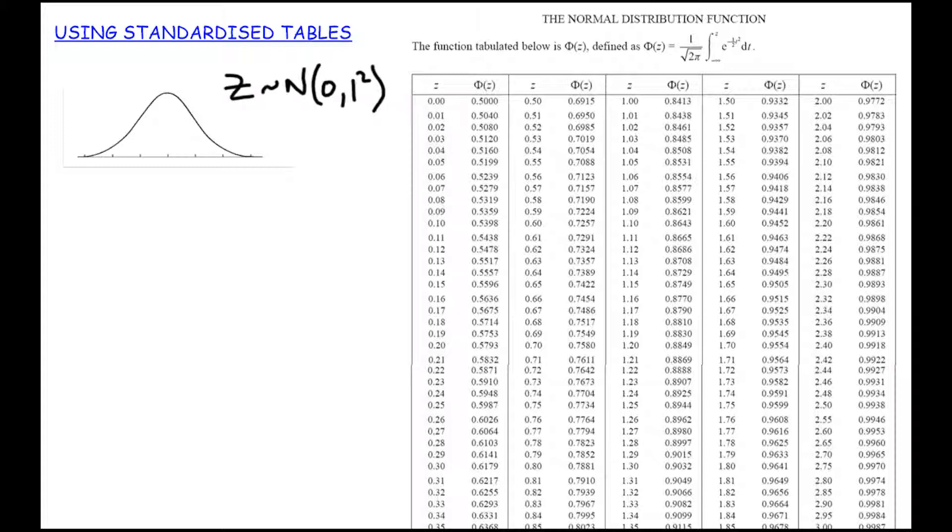These are all based on the fact that Z follows normal distribution where the mean is 0 and the standard deviation is 1. This is what we call the standardized normal distribution. We'll look at how we can turn any distribution into this distribution later on, but for now, if we're working with the standardized normal distribution, how do we find our probabilities?